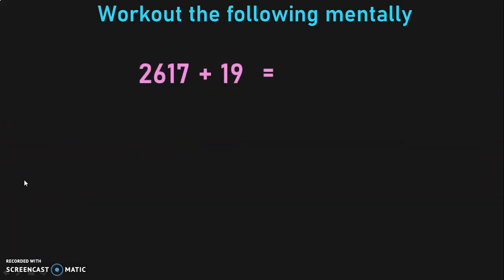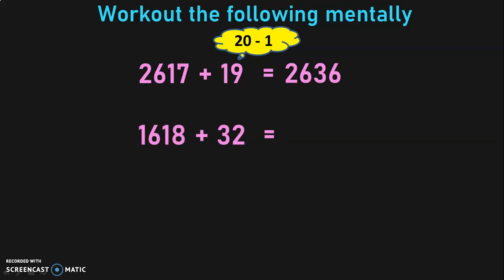Let us do some exercises now. Work out the following sums mentally. First, 2617 plus 19. Since 19 is close to 20, we write 19 as 20 minus 1. So, 2617 plus 20 gives 2637, and subtract 1 to get the answer 2636. Next, 1618 plus 32. Since 32 is close to 30, write 32 as 30 plus 2. So, 1618 plus 30 gives 1648, then add 2 to get 1650. See how fast the calculations are done using the mental mathematics approach.